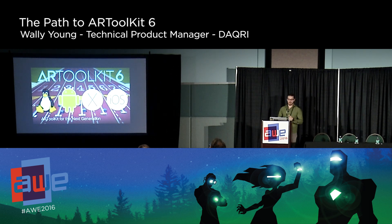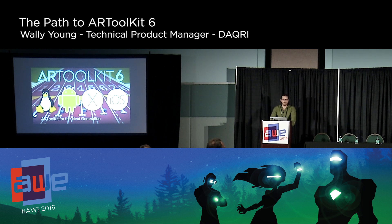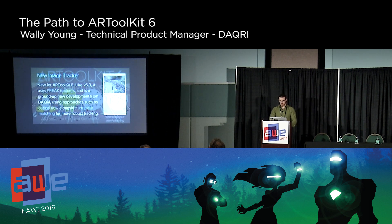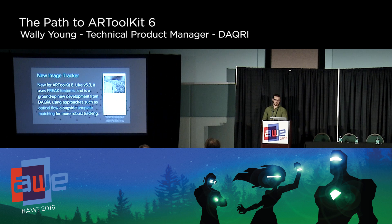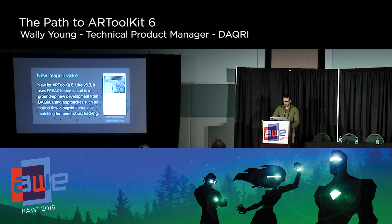When we release, we're releasing on Linux, Android, OSX, and iOS — so we are losing Windows for now. We have a brand new image tracker built from the ground up at our vision sensor group in Sunnyvale. It uses Freak features for initialization, just like version 5.3, but then uses optical flow along with template matching. We find that our pose estimation is much more robust, and frankly, we don't think we've ever tracked better.